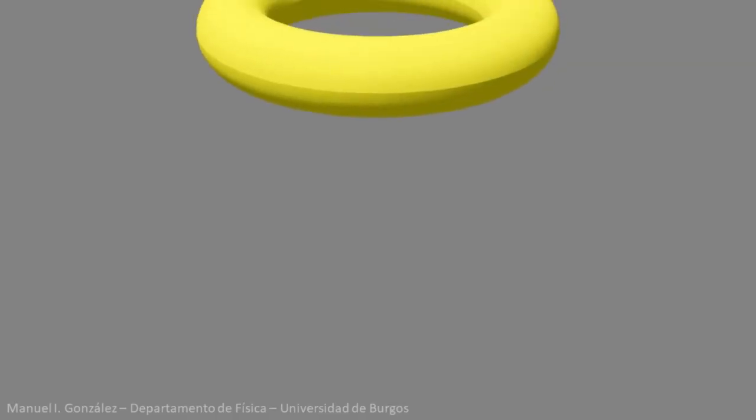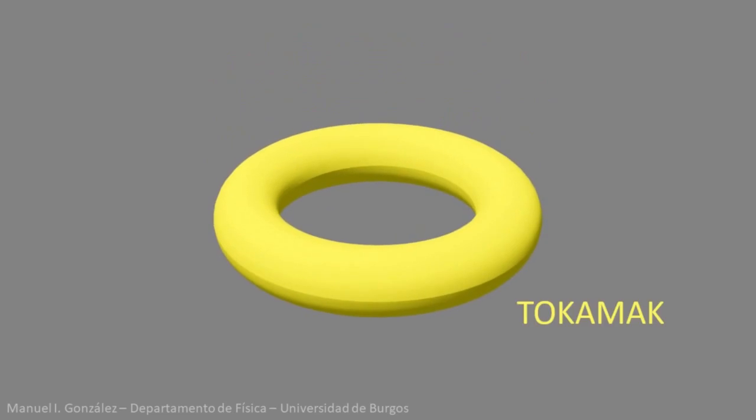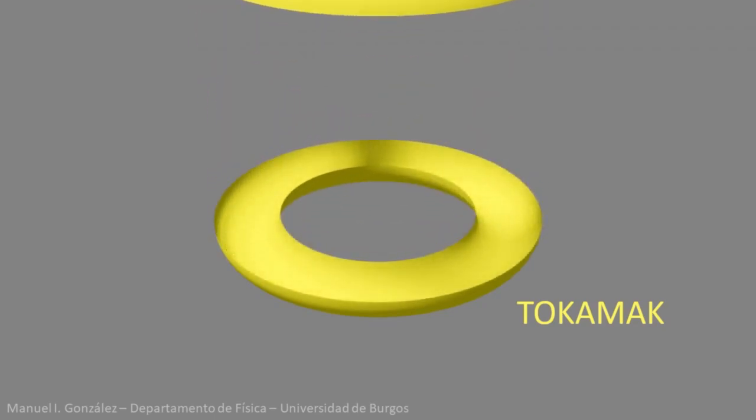In a magnetic confinement nuclear fusion facility, the central element is the tokamak, the Russian acronym for magnetic toroidal chamber. It is a donut-shaped enclosure which is initially evacuated.